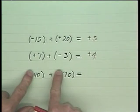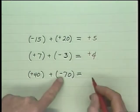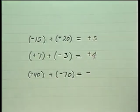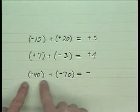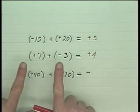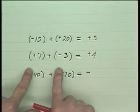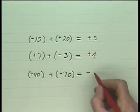We can determine the sign of the answer before we even do arithmetic. We ask which of these two has the larger absolute value. Well, this one does, so the answer is going to be negative. Then we take the difference — the smaller from the larger absolute value — which is 30.